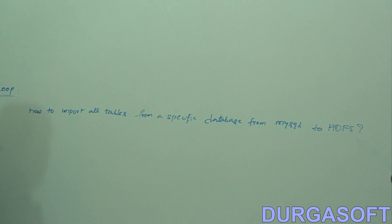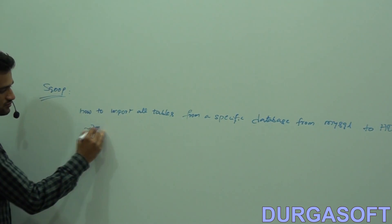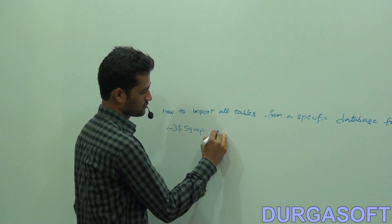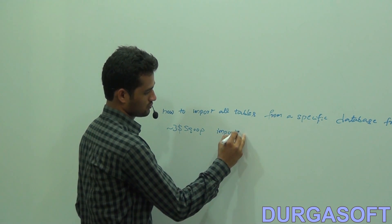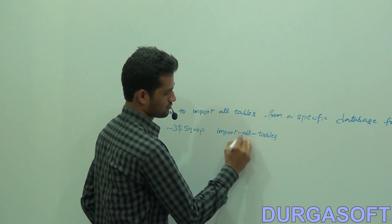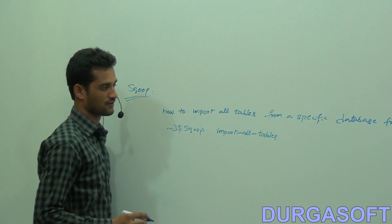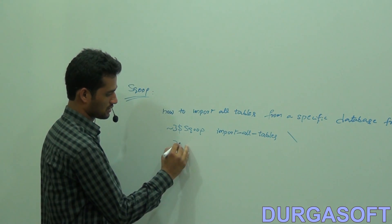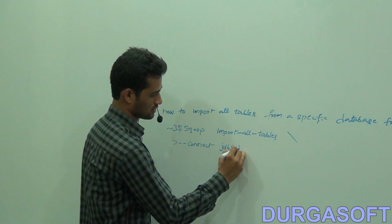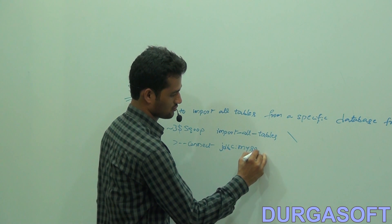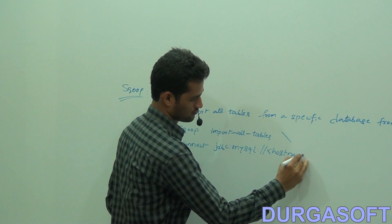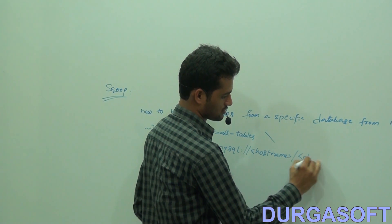See, this one is very easy. Just use 'sqoop import-all-tables' with '--connect jdbc:mysql://hostname/database_name'.